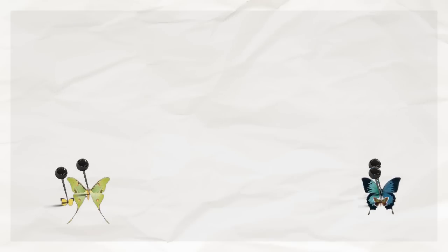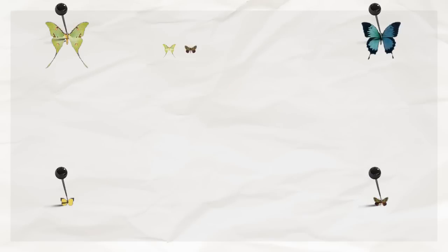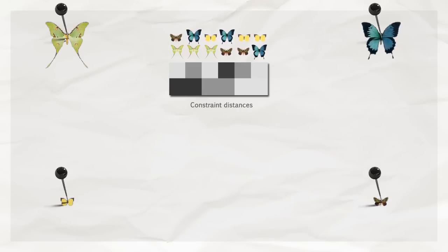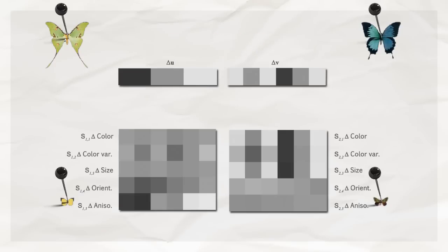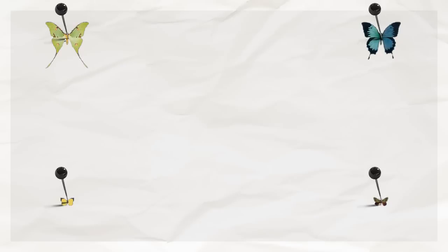The result is a parametric coordinate for each primitive. Next, we consider all pairs of primitives, in particular their difference in the parametric coordinates and their features. We find the optimal linear scaling, S, for each feature difference, to explain the difference in both parametric coordinates. We pick the unique set of features that best explain the differences.